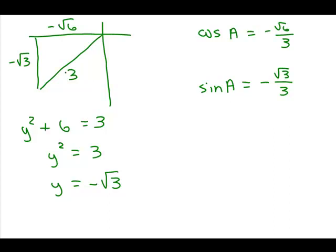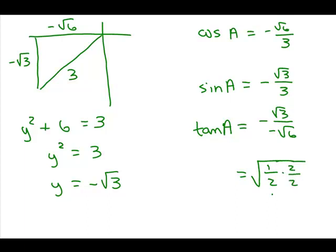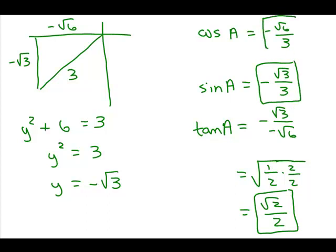Looking at the picture, we can also get the tangent. The tangent is y over x, so we have negative square root of 3 over negative square root of 6, which equals square root of 3 over square root of 6, or square root of 1/2. Multiplying by 2 over 2 inside the square root gives square root of 2 over 2. So there's the tangent, the sine, and the cosine.